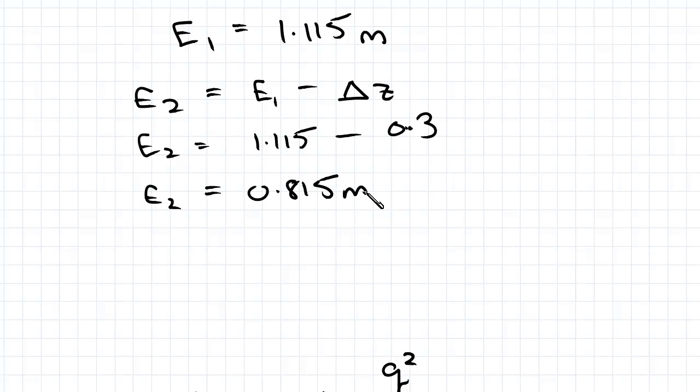What we didn't do in the previous example is make sure e2 was greater than ec. So let's do that now. You'll have to do this for every specific energy equation type question, any open channel flow question really. You'll have to check that e2 is greater than ec and then depending on whether it is or not you carry out the procedure as necessary.